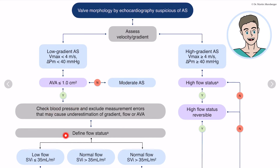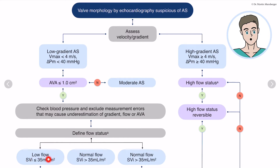In our Ecolab we always try to measure the blood pressure in a routine exam, especially when we do stress echo. In this case, the blood pressure is important to exclude measurement errors. If you have a normal blood pressure, you have to define the flow state: is there a low flow with a stroke volume index below 35 mL/m², or is there a normal flow above 35 mL/m²?